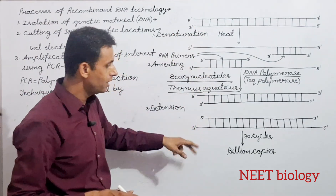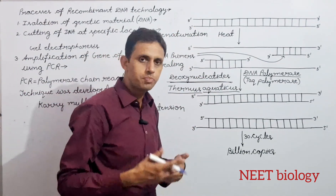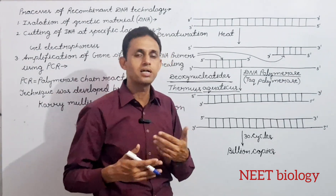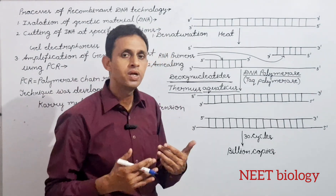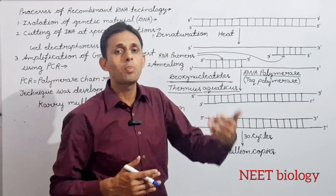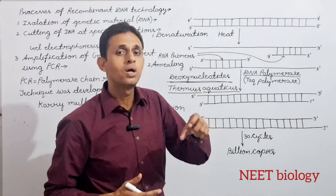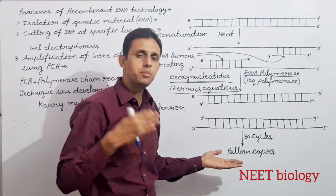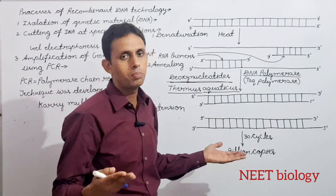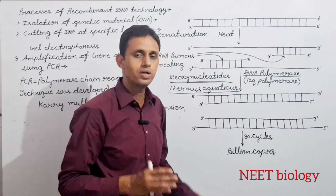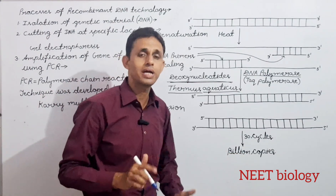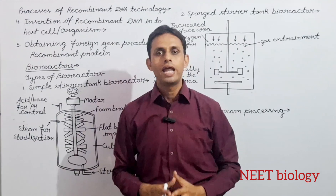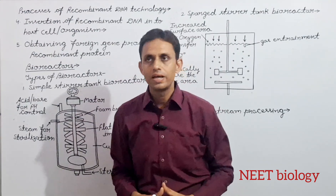Extension में primer का polymerize होने से complete दो DNA fragments बन जाते हैं। तो तीन steps हैं: denaturation, annealing, और extension। इस तरीके से gene of interest की दो copies बनती हैं। अगर इस cycle को 30-40 बार repeat करें, तो millions-billions copies of DNA मिल जाएंगी। इसी process को Polymerase Chain Reaction कहते हैं।